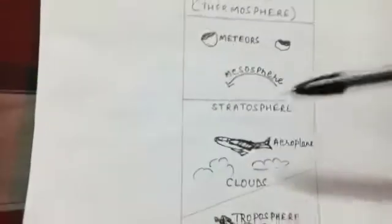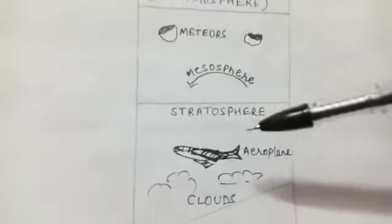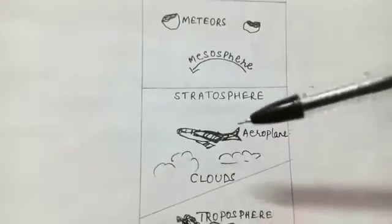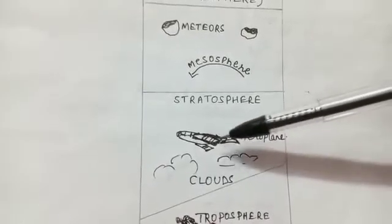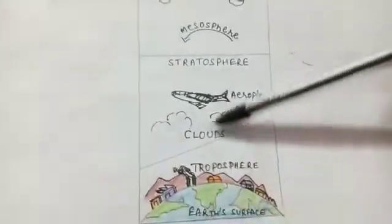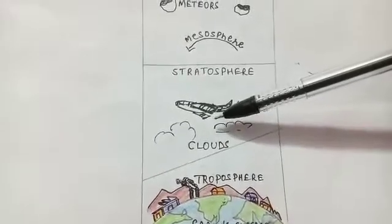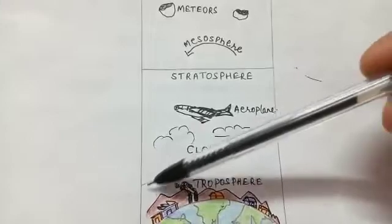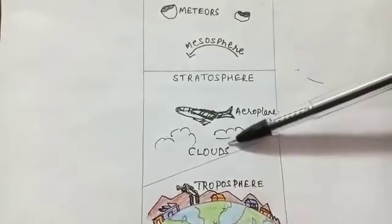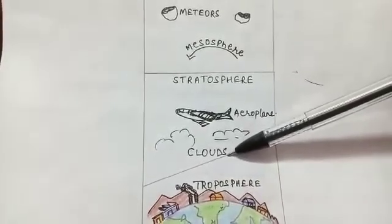Now we come to the second layer of the atmosphere, that is the stratosphere. This layer lies above the troposphere and it extends to a height of around 50 kilometers above the surface of the earth. Now there is a narrow boundary that separates this stratosphere from troposphere. This is known as tropopause.